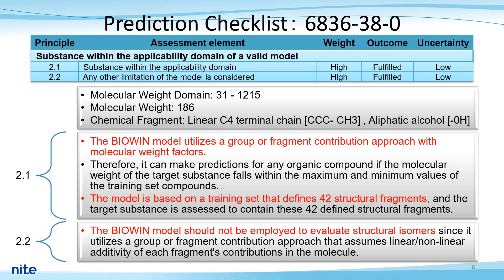The purpose of 2.1 and 2.2 assessment elements is to make sure the substance under analysis is within the applicability domain of the model. The BioWin model should not be used to evaluate structural isomers, because BioWin employs a group or fragment contribution approach that assumes the linear and non-linear additivity of each fragment's contributions in the molecule.